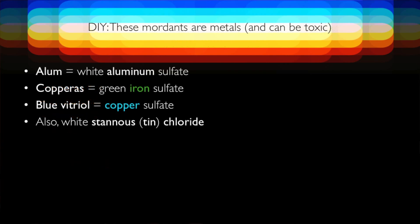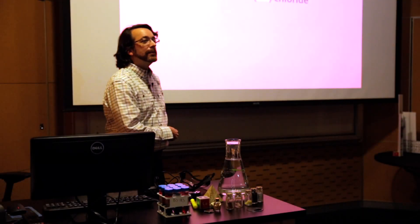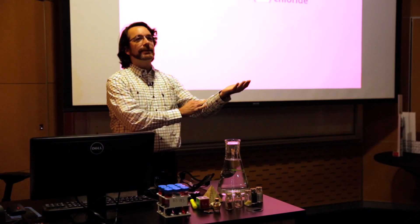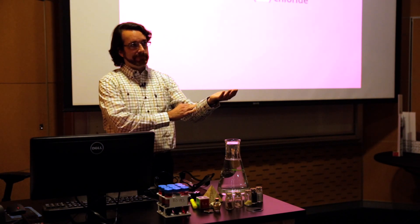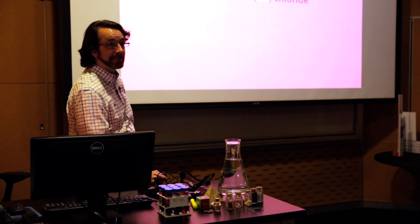If you look at what many mordants contain, their name sometimes shows you it contains a sticky metal. Aluminum is in one, iron is in another, copper — the stickiest metal — is in blue vitriol. Tin is also another mordant. This is one of the reasons why mordants can be toxic: if you have a sticky metal and it gets into the wrong place in your body, it's going to stick everything up. Chemical stickiness actually explains a lot about life, and what's poisonous and hazardous.